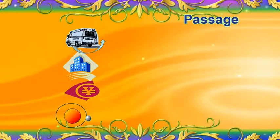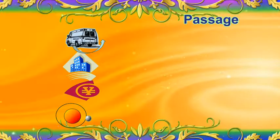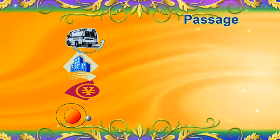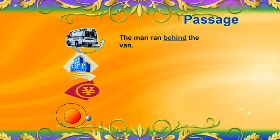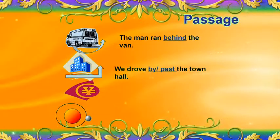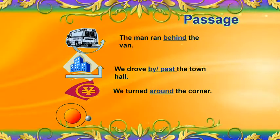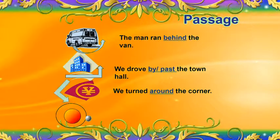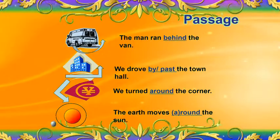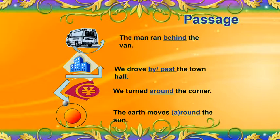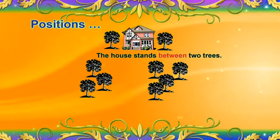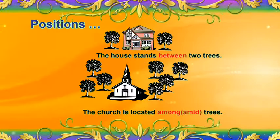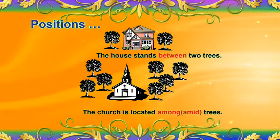Dear children, look at the picture for more clarification. Use of preposition in case of passages: the man ran behind the van. We drove by or past the town hall. We turned around the corner. The earth moves around the sun. The house stands between two trees. The church is located among the trees. Here, 'between' and 'among' have been used to show the position of the houses.